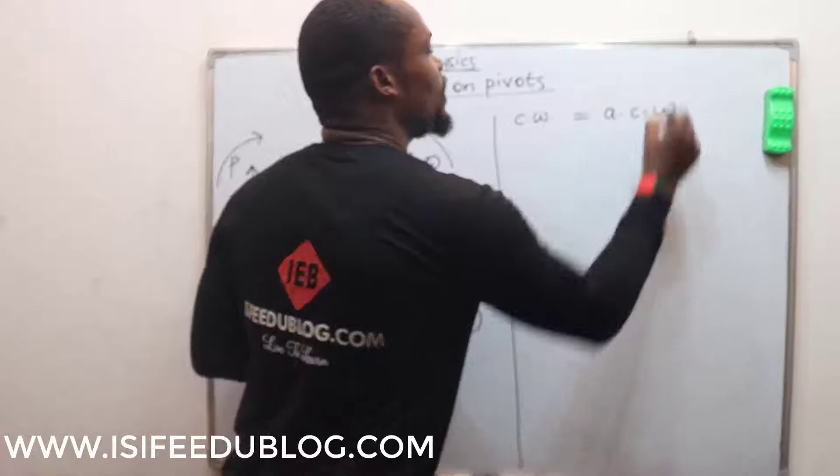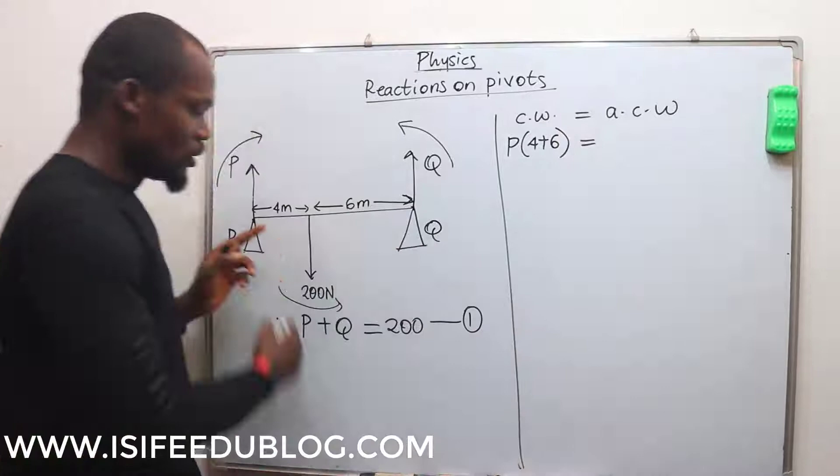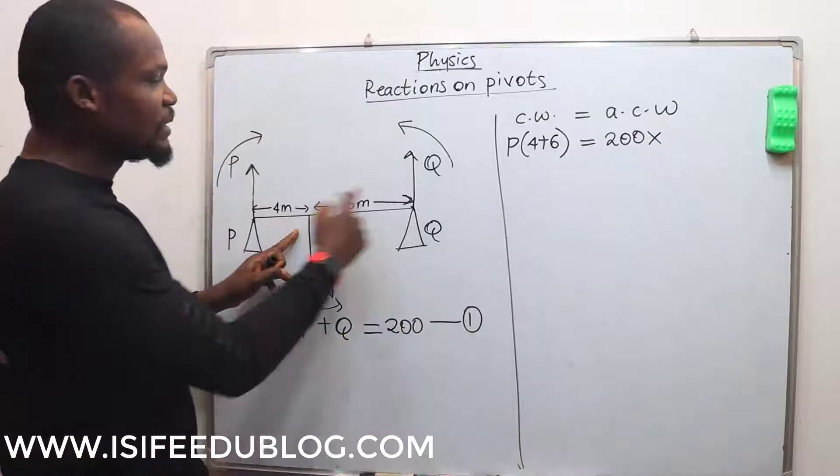4 plus 6 equals the anticlockwise moment, which is 200 multiplied by this distance of 6. This gives us 10P equals 200 times 6.